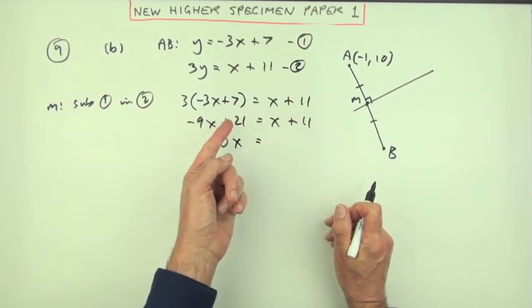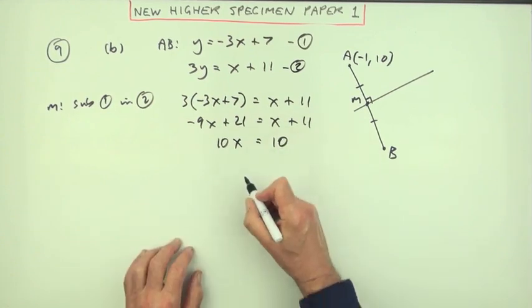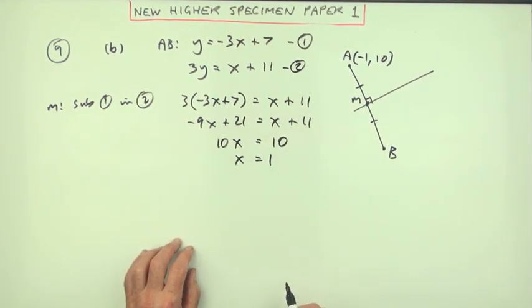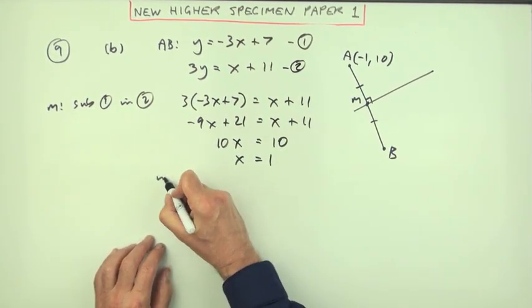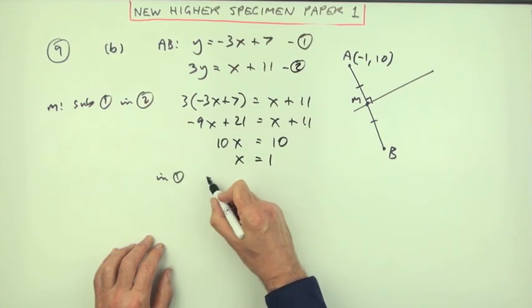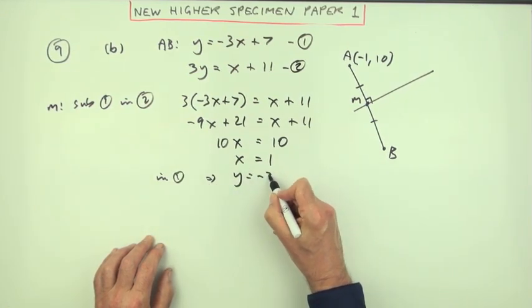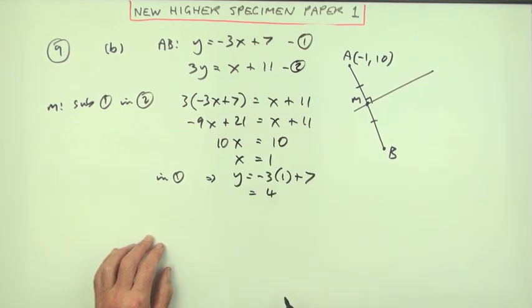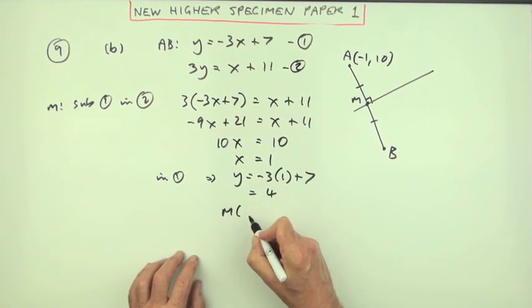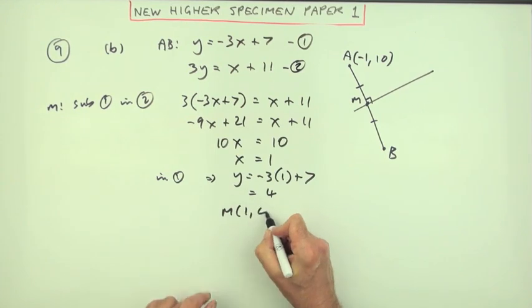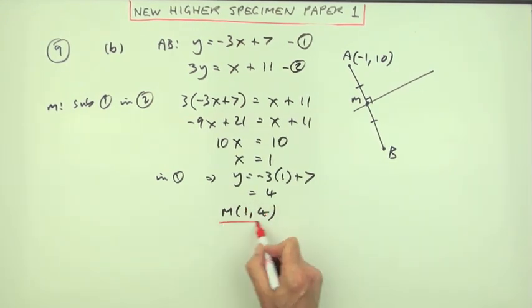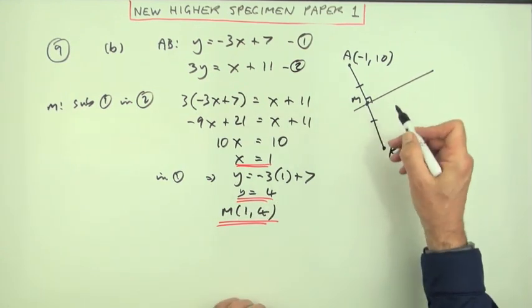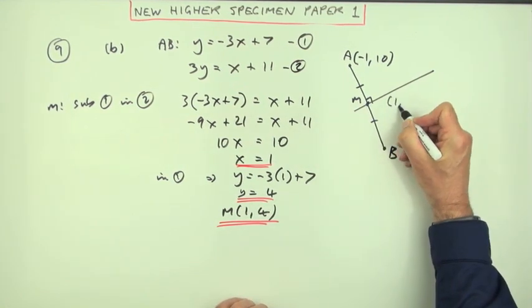Switch them this way. Plus 9 makes that 10x. Take away the 11 makes it 10, so x equals 1. Putting that into number 1 means y equals -3 times 1 plus 7, which is 4.